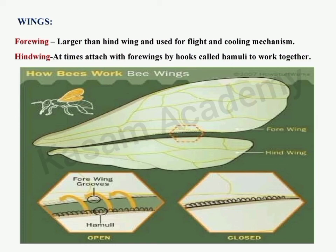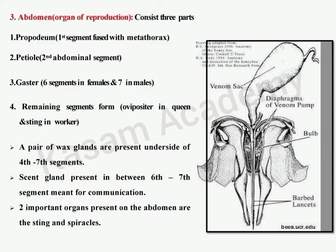Coming to the posterior part, the abdomen has nine segments in adults and ten in larvae. The first abdominal segment fuses with the metathorax to form the propodium, the second segment is constricted and called the petiole or pedicel, and the subsequent segments are known as the gaster. Important glands in the abdomen include wax glands in segments four to seven for comb construction, and scent glands in segments six and seven for communication. Two important organs on the abdomen are the sting — a modified ovipositor serving as defense — and spiracles, the breathing pores on the sides of the thorax and abdomen.